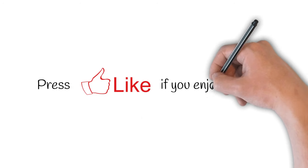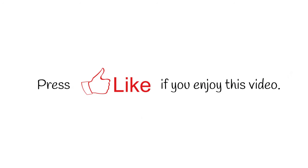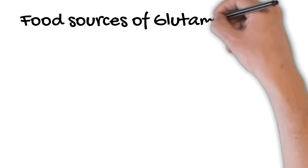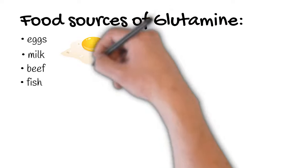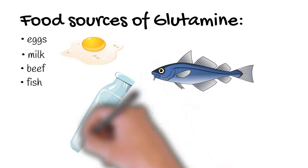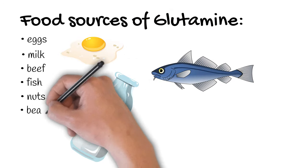So the question is how can we get enough glutamine? Well you can get glutamine in foods such as eggs, milk, beef and even fish, but even better sources are probably nuts, beans, corn and even rice.